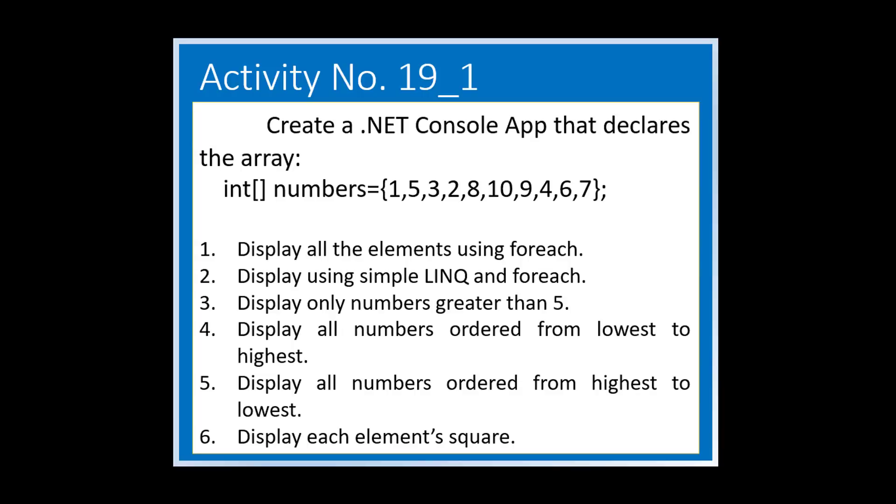In this activity, we will create a console app that has an array of integers with initial values of 1, 5, 3, 2, 8, 10, 9, 4, 6, and 7. We will display the array or part of the array by following six numbered bullets.